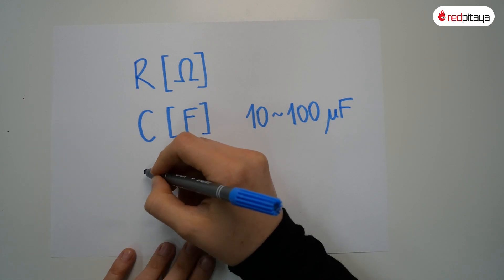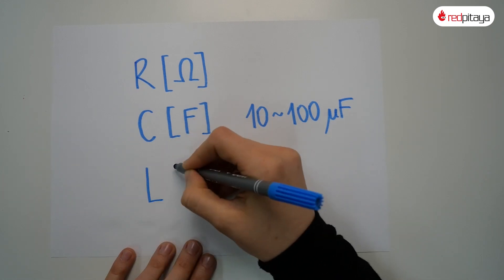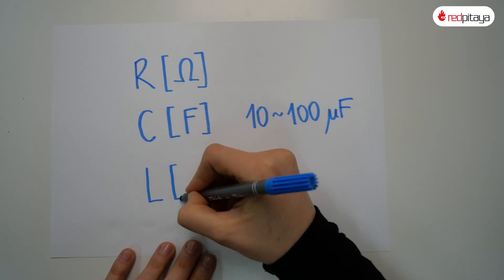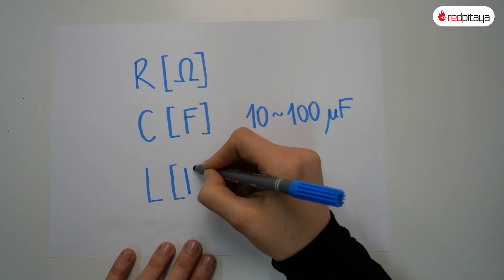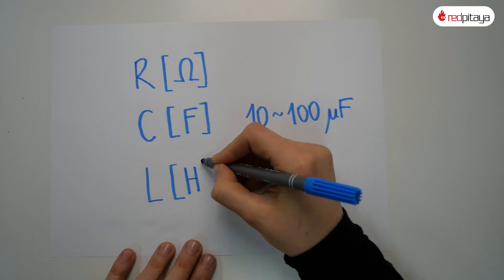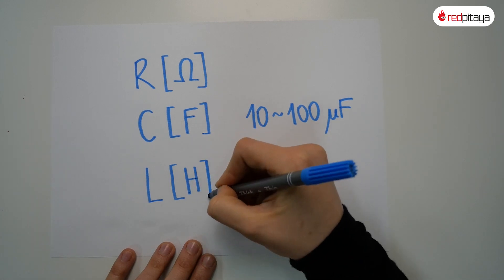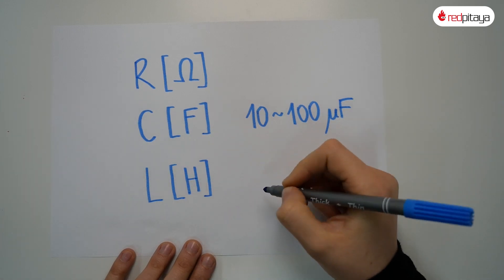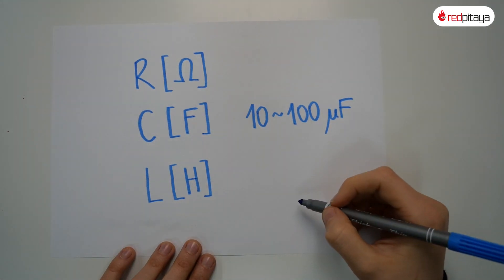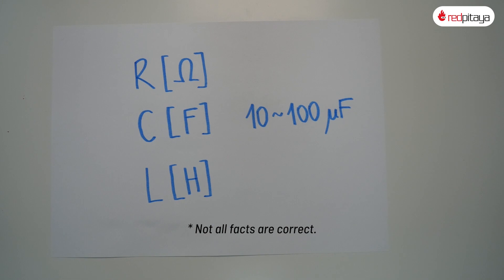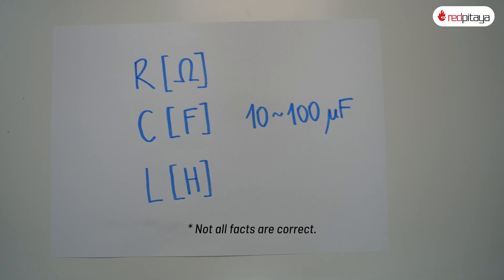Inductors have inductance, measured in henrys. The unit got its name because inductors used to have an iron core and Henry Cavill played the Man of Steel.